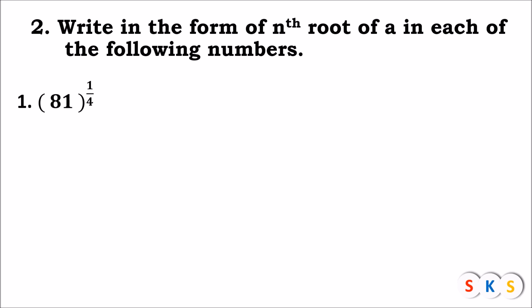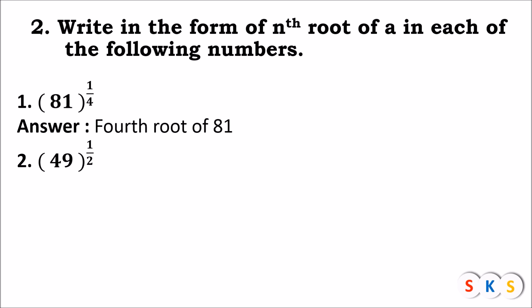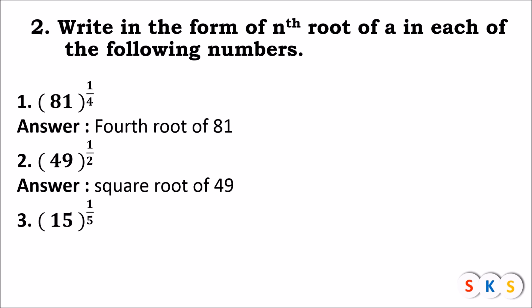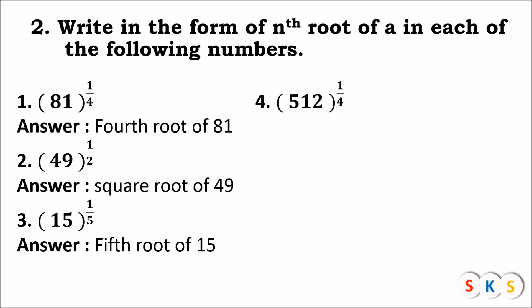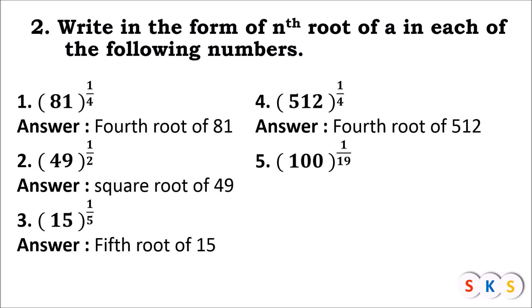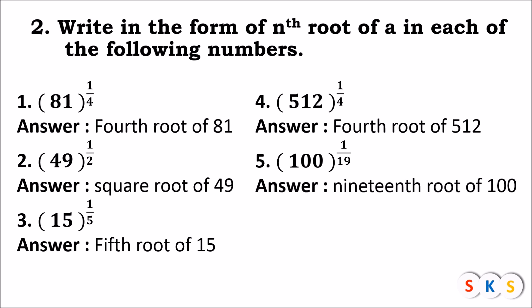The index form with power 1/4 for 81 gives the fourth root of 81. For the index form with denominator 2, it is the square root of 49. For the index form with denominator 5, it is the fifth root of 15. For the power 1/4 with base 512, it is the fourth root of 512. For the index with denominator 19, it is the 19th root of 100. For the index 1/7 with base 6, the denominator is 7, so it is the 7th root of 6.